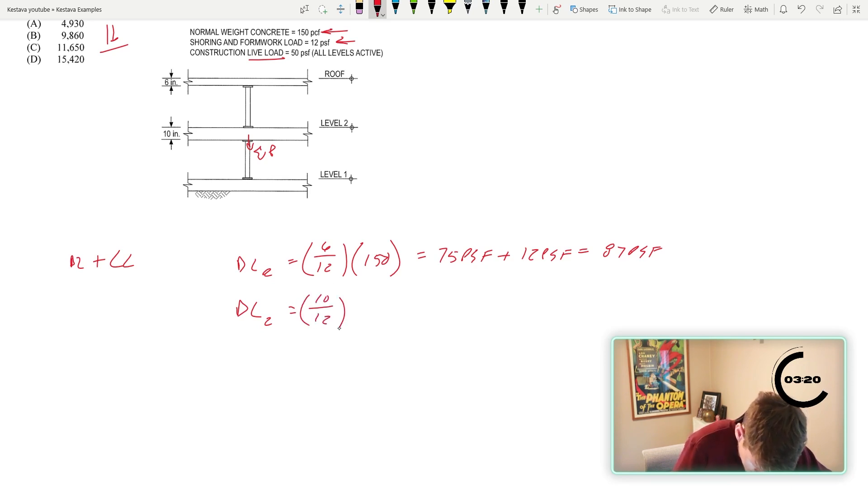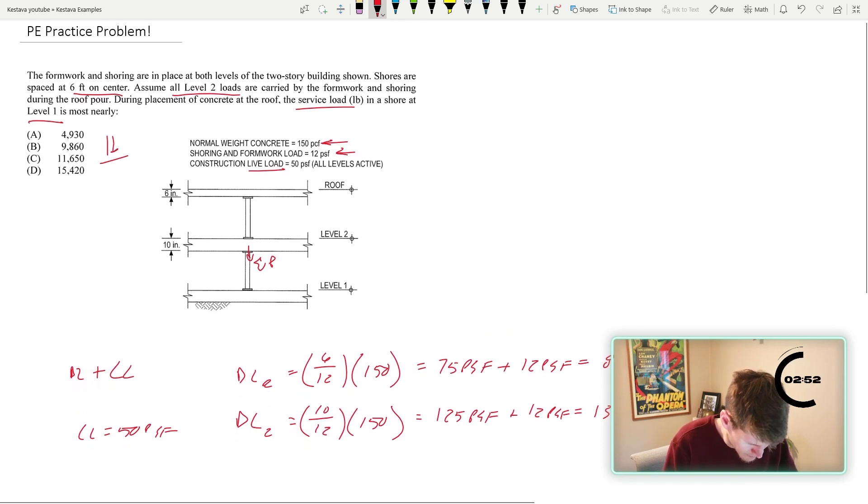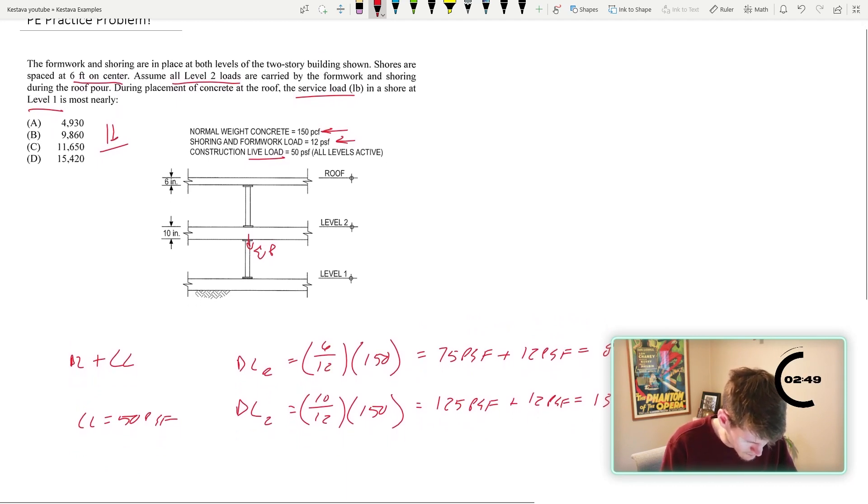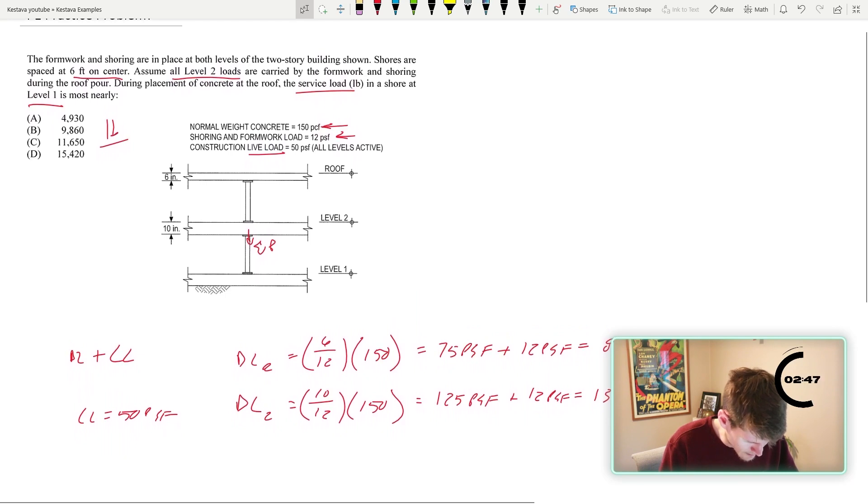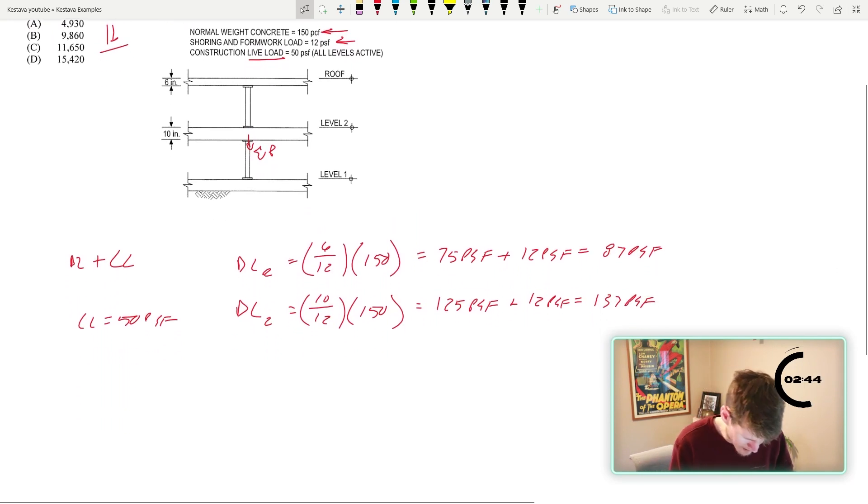10 inches concrete as well. 10 over 12 times 150. That's 125 PSF plus shoring as well. 12 PSF. That gets you 137 PSF on the second. Okay. And then live load is 50 PSF for both and assume all level two loads are carried by the formwork. So level two and the roof is being poured. So it's both, it's both combined. Okay.